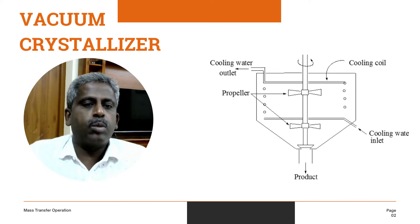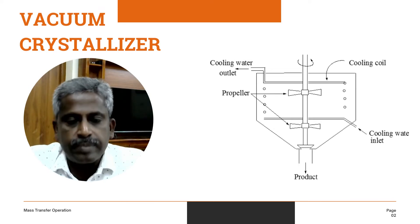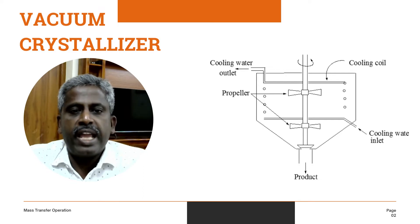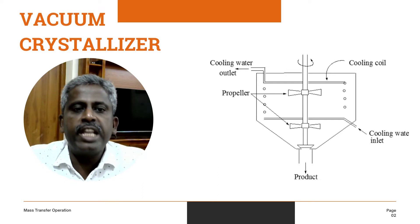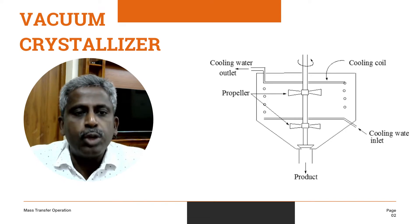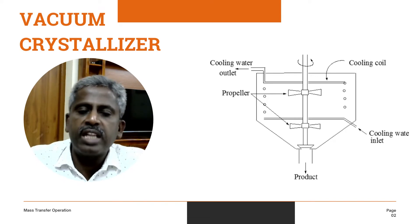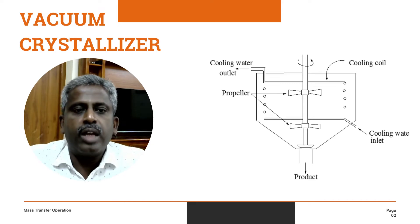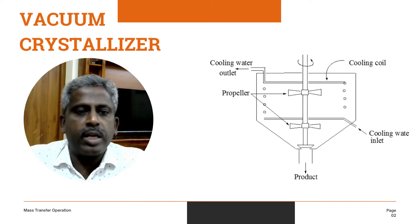First, we will discuss the agitated batch crystallizer. Looking at the figure, there is a tank with a central shaft running through it. Water is circulated through the cooling coils, and the solution is agitated by propellers on the central shaft. The product is collected at the bottom of the crystallizer. It is a batch process.